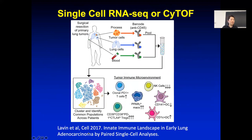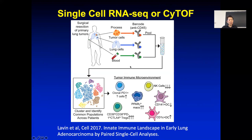For example, in one very early study from 2017, they were looking at blood cells and lung — normal lung tissues and stage one lung tumors. You can use a CD45 antibody to sort all the lymphocytes and immune-important cells, then follow it with single-cell expression analysis.